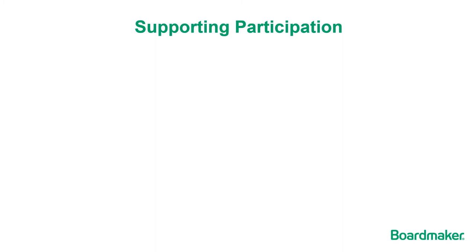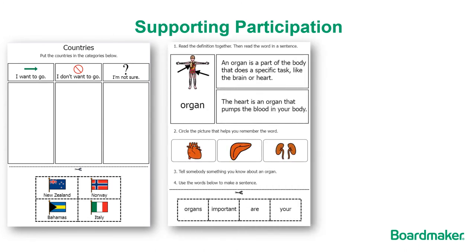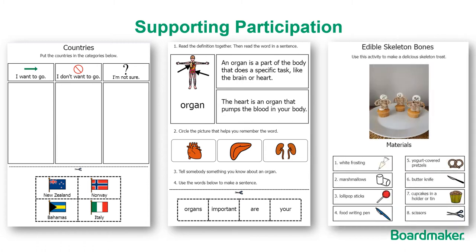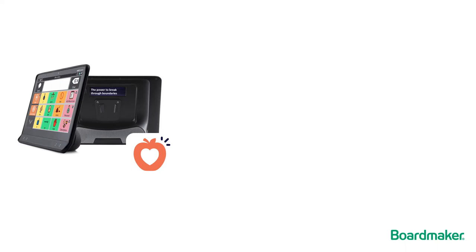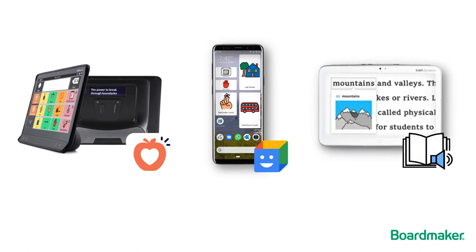Engage those you support in becoming active participants in the world around them by creating resources with PCS — whether it's deciding where to go on your next holiday, or learning new vocabulary about topics in school or day-to-day life. Help increase independence and participation when following directions of a recipe, craft or activity. With PCS integrated into AAC systems like Tobii Dynavox's Snapcore First and mainstream tech like Google Assistant's Action Blocks and Microsoft's Immersive Reader, you can provide consistency of symbols, communication, independence and learning tools.